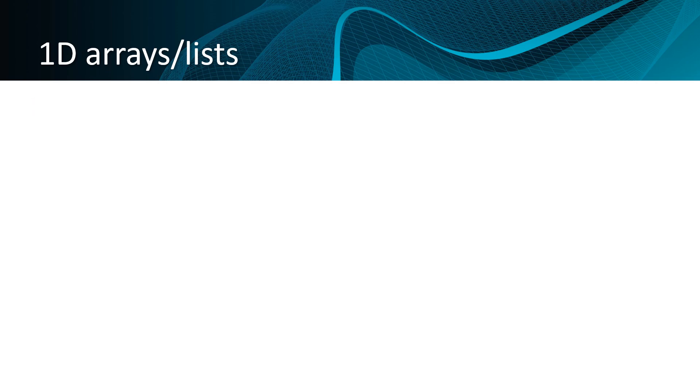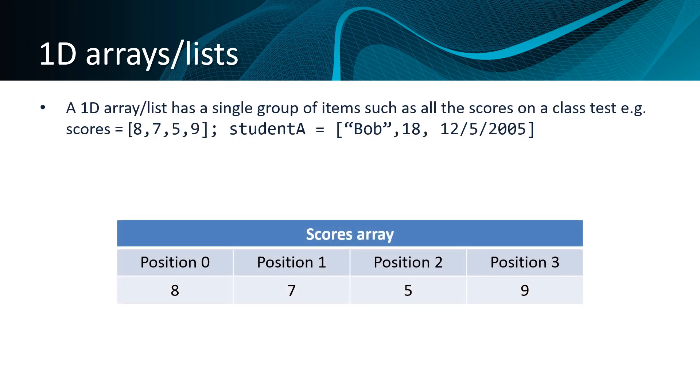A 1D array or list has a single group of items, such as all the scores on a class test. For instance, if the class had four students, they might have scores of 8, 7, 5, and 9. Remember, if we were creating a list, the values would not all have to be of the same data type. So we might, for instance, store a variety of information about a student, such as their name, age, and date of birth.